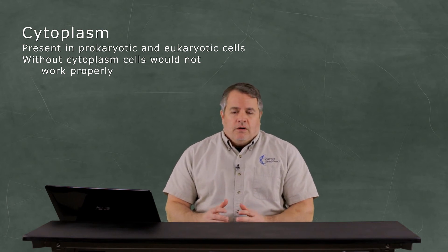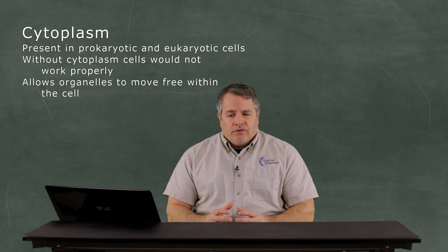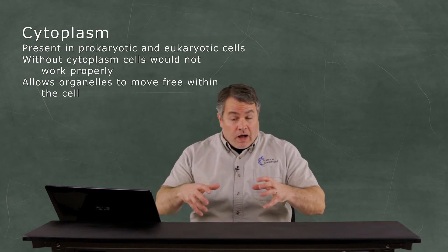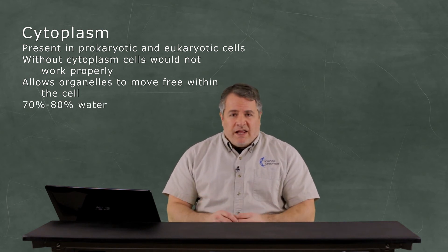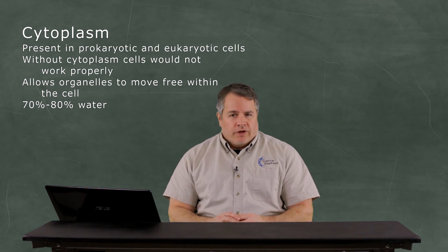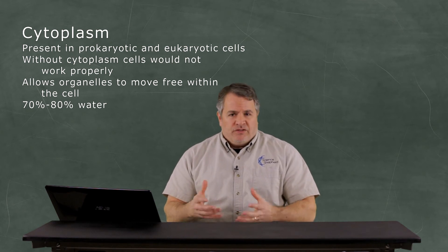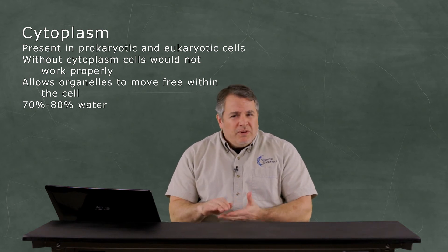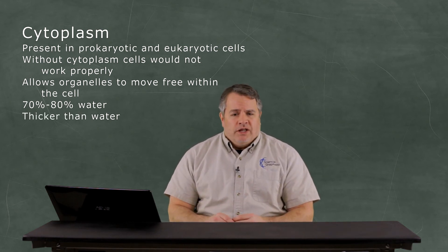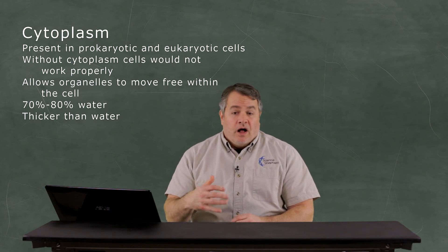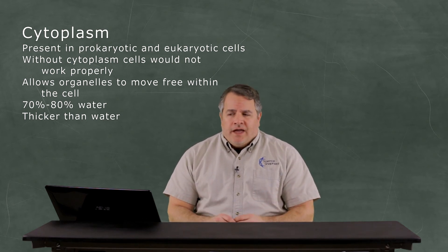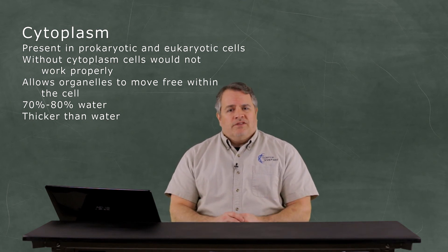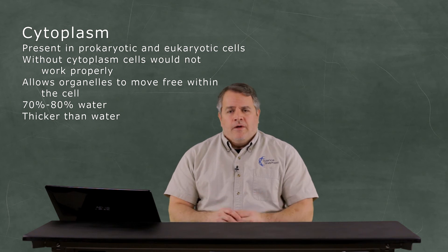The cytoplasm is made in such a way that it allows for the organelles basically to kind of float around and move around inside of the cell. The cytoplasm is about 70% to 80% water. It depends on the particular cell and the organism that the cell's in. But it's mostly water. And so it's very fluid. But it's also a little bit thicker than water.